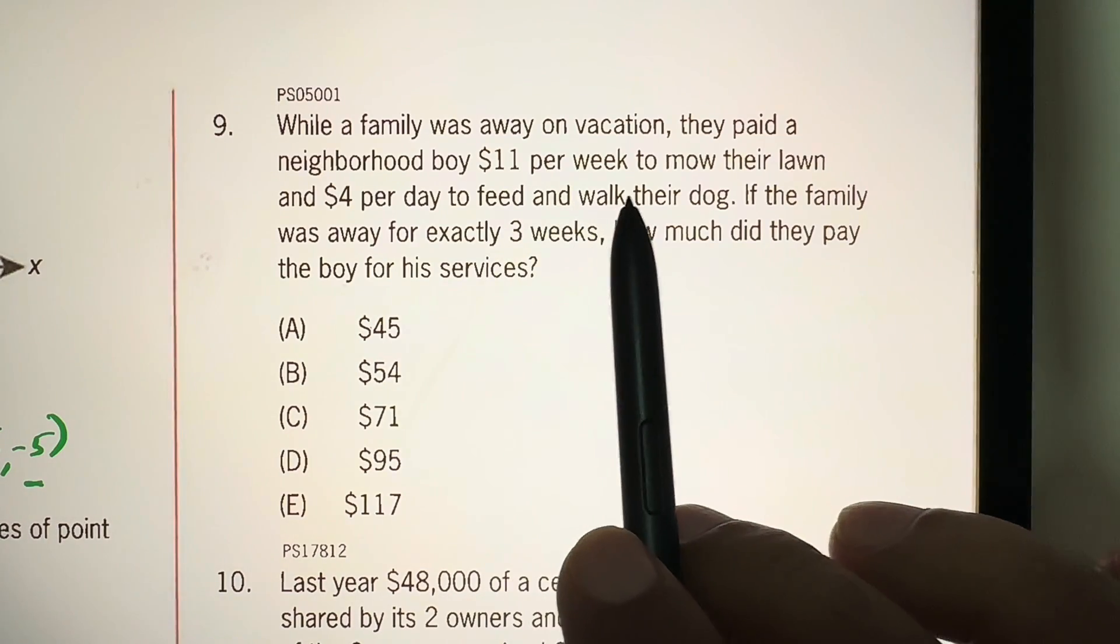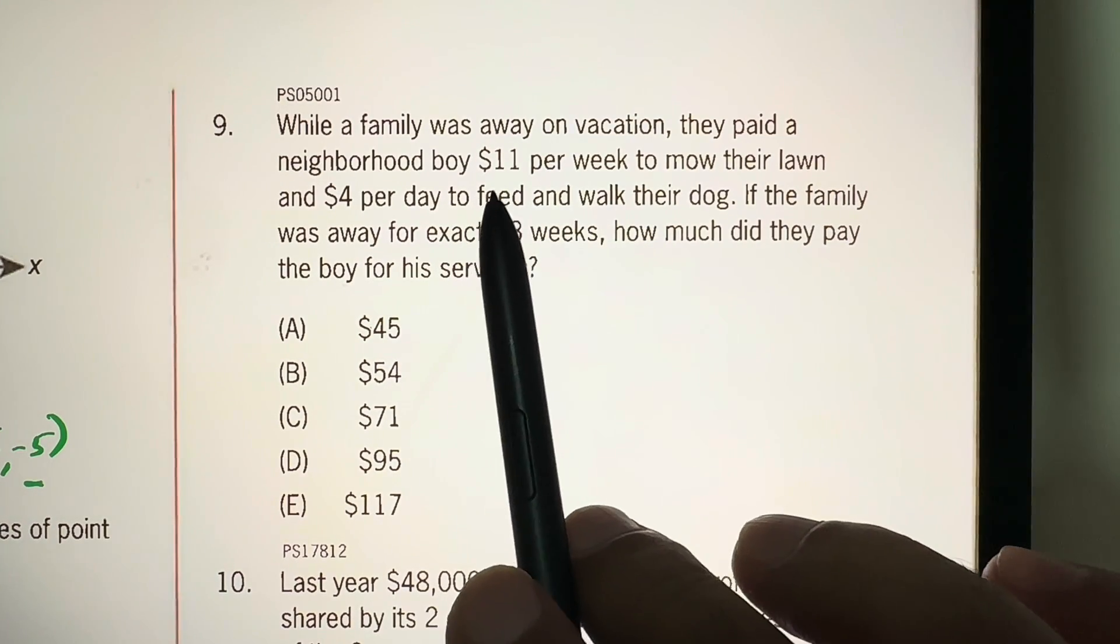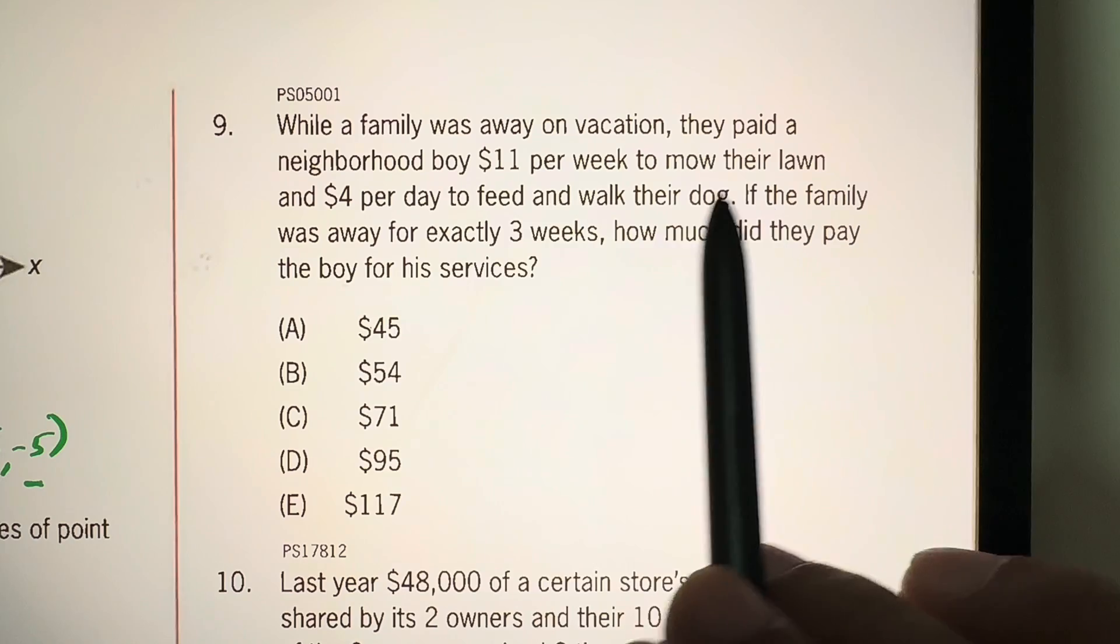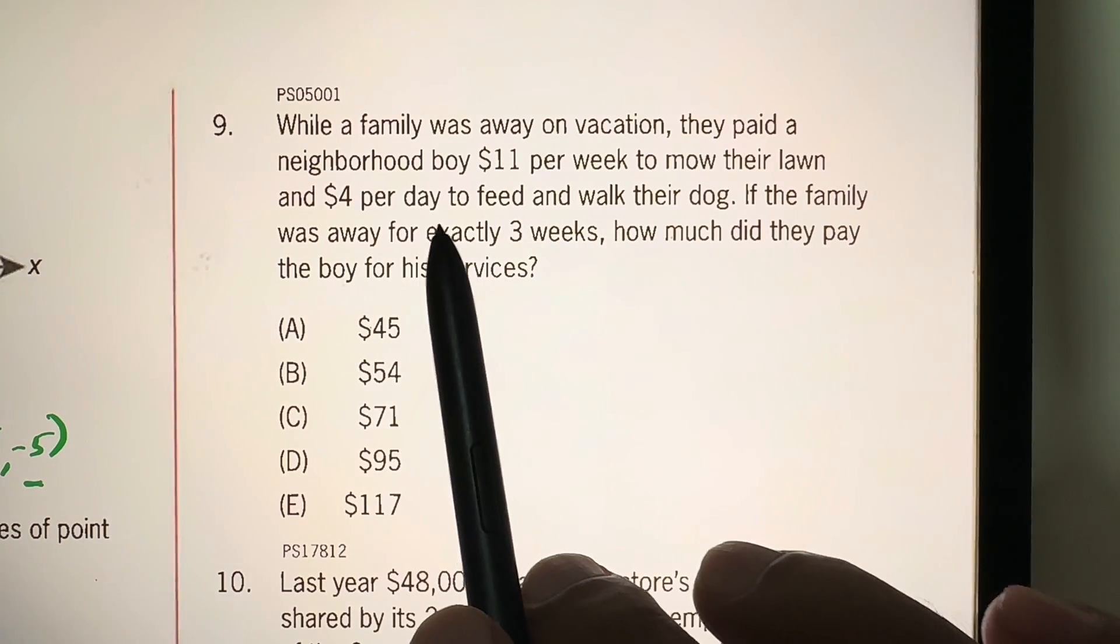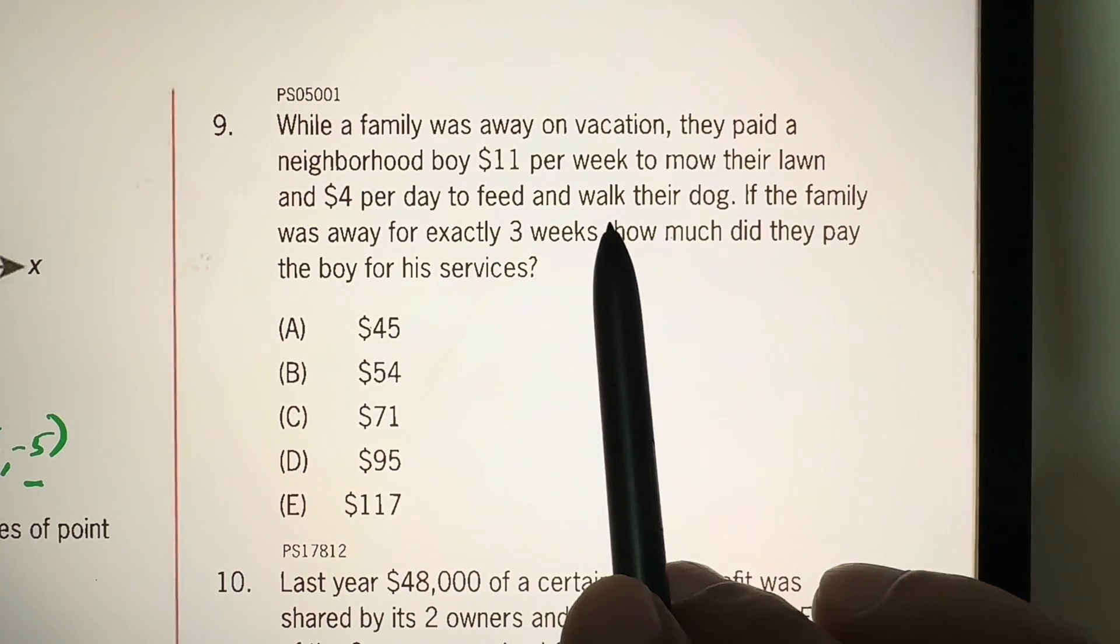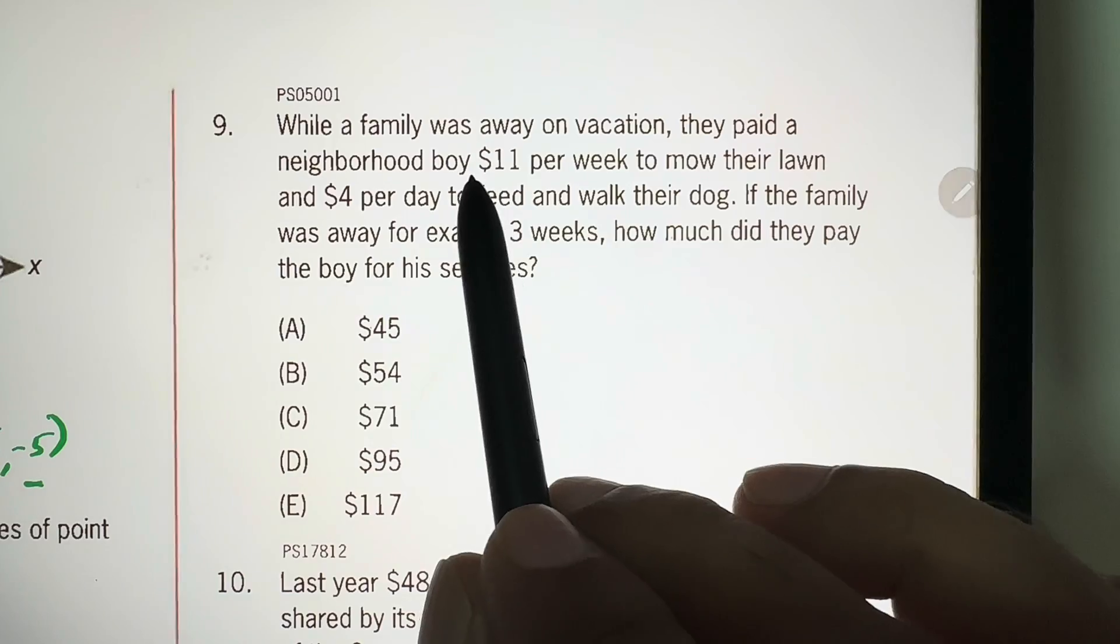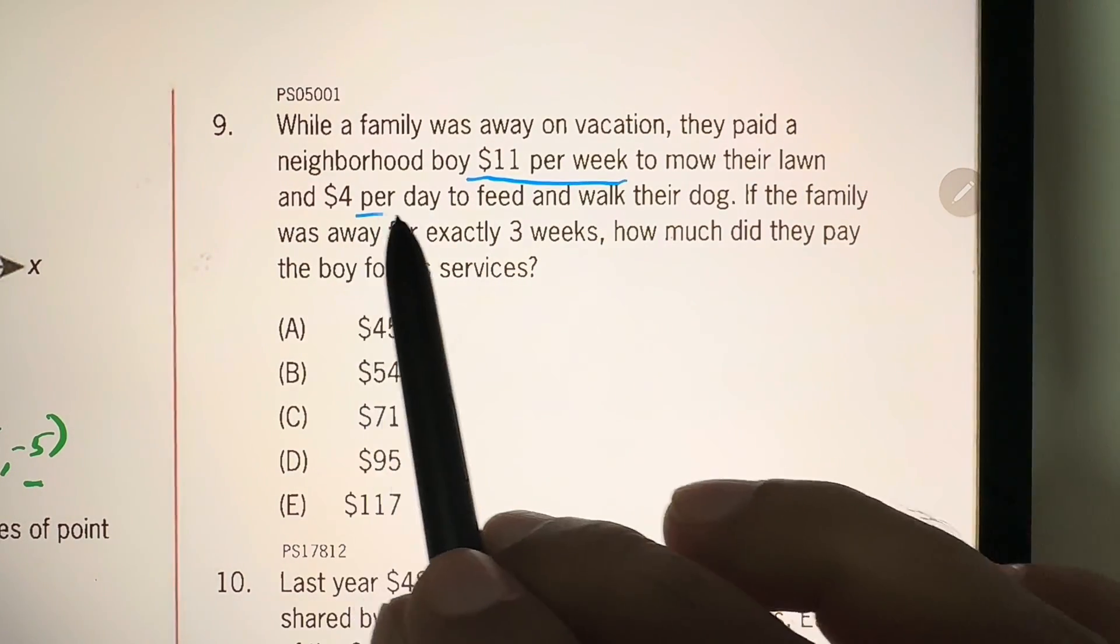While a family was away on vacation, they paid a neighborhood boy $11 per week to mow their lawn and $4 per day to feed and walk their dog. Be careful here. This is per week and this is per day.